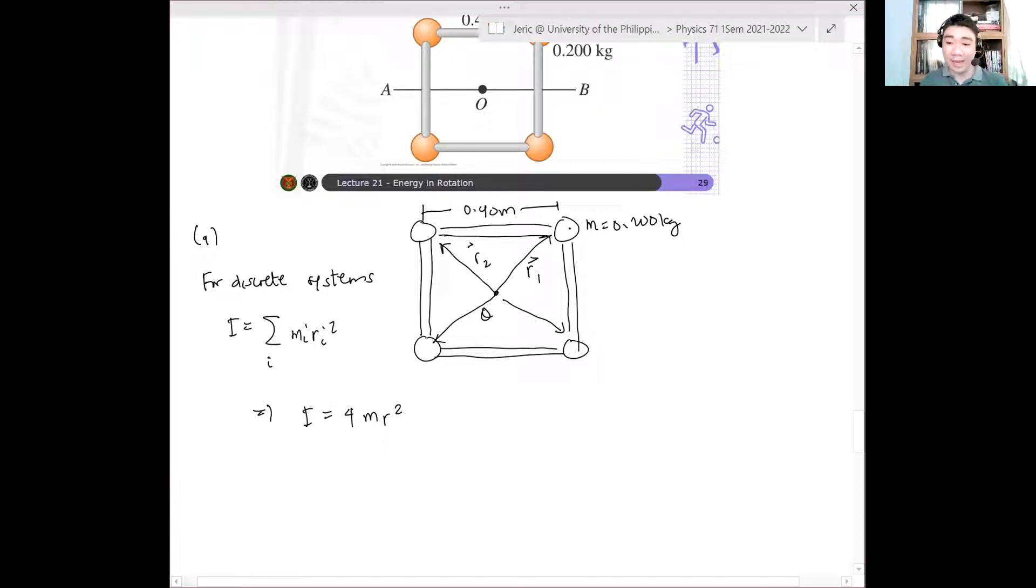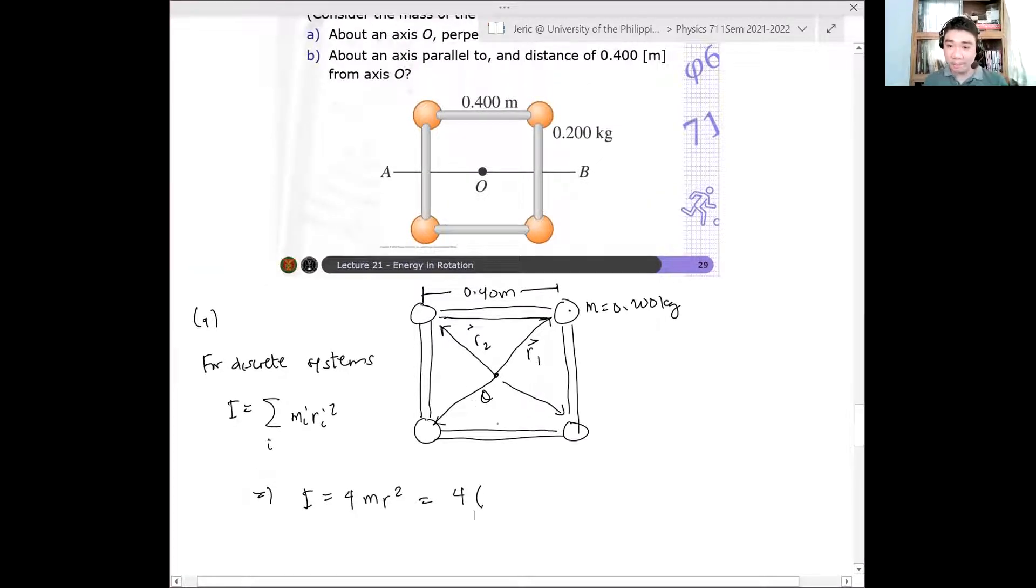So in that case, ang lalabas sa akin ay, this is just equal to what? Four times the mass of the body, which is 0.2 kilograms times what? Ano yung R? So if this is 0.4, ano itong distance? Let me draw this. So, if this is my O, and this is the object, ano itong distance na ito? Ano itong distance na yan?